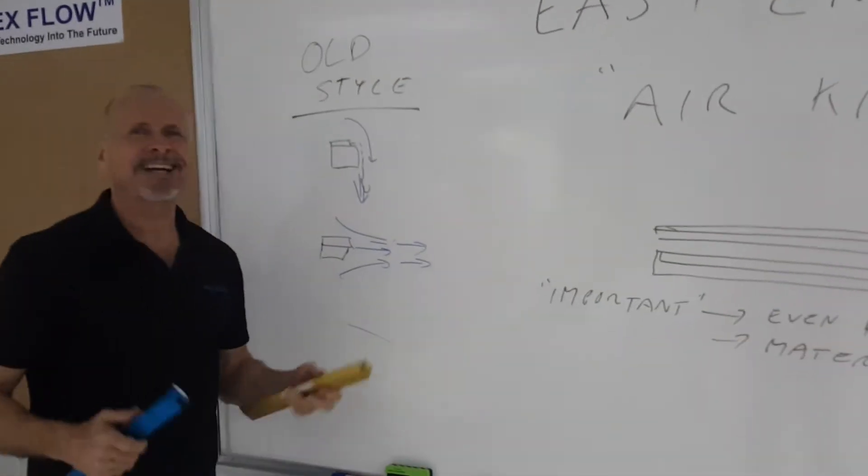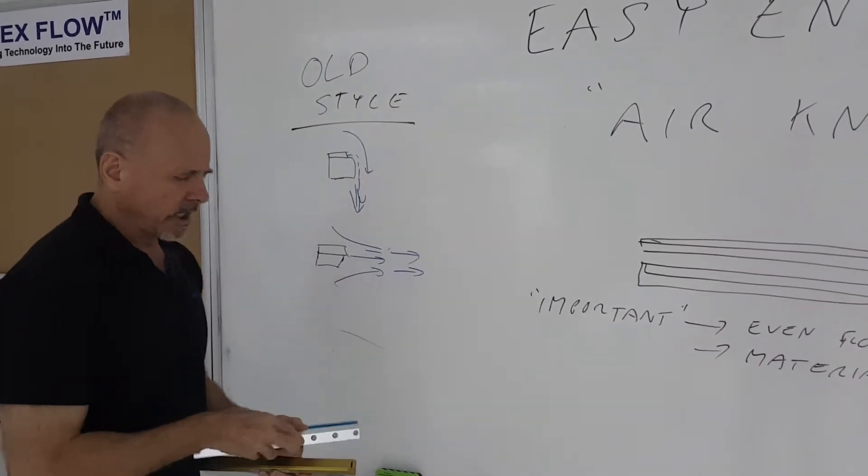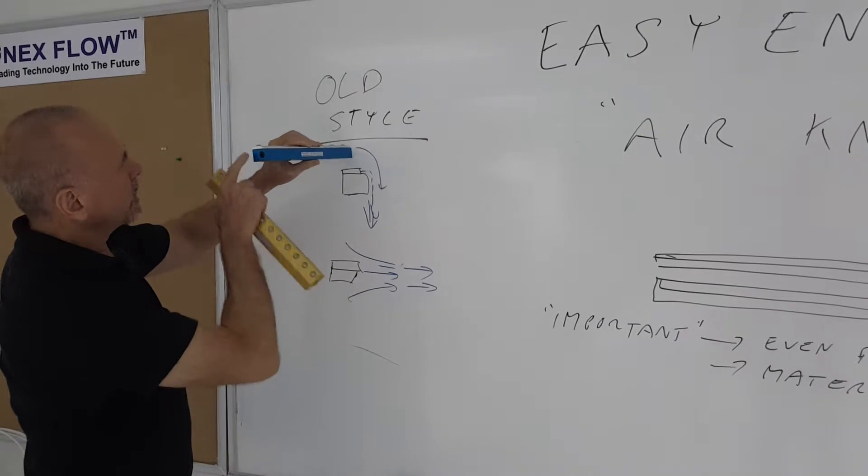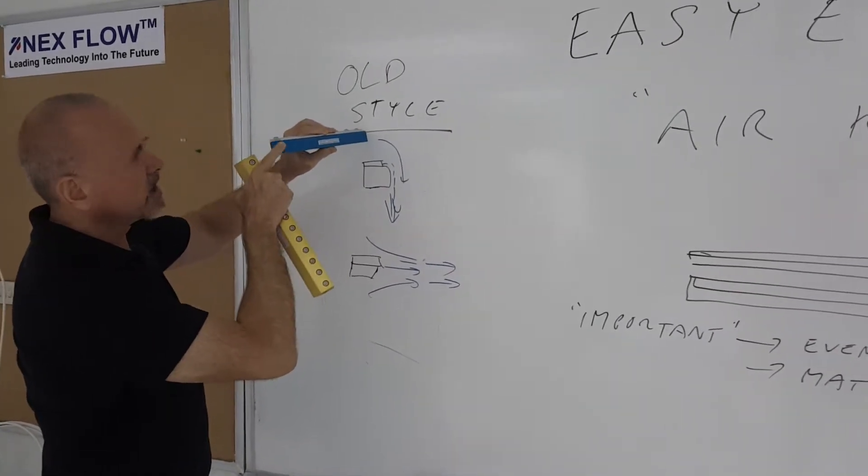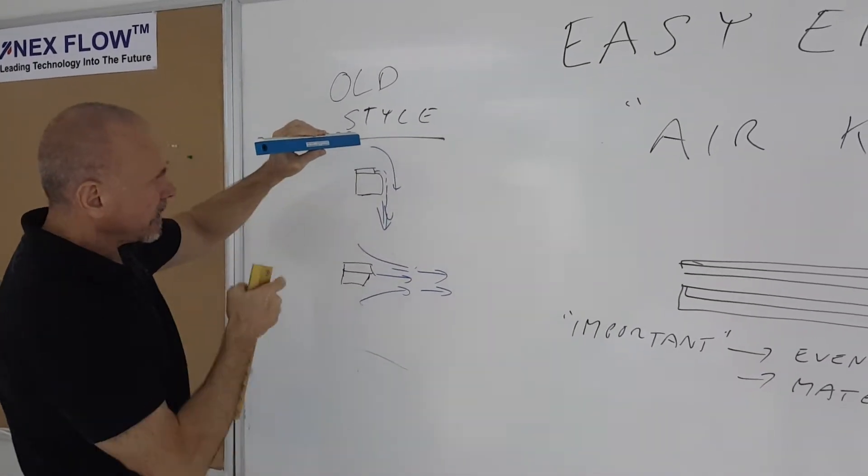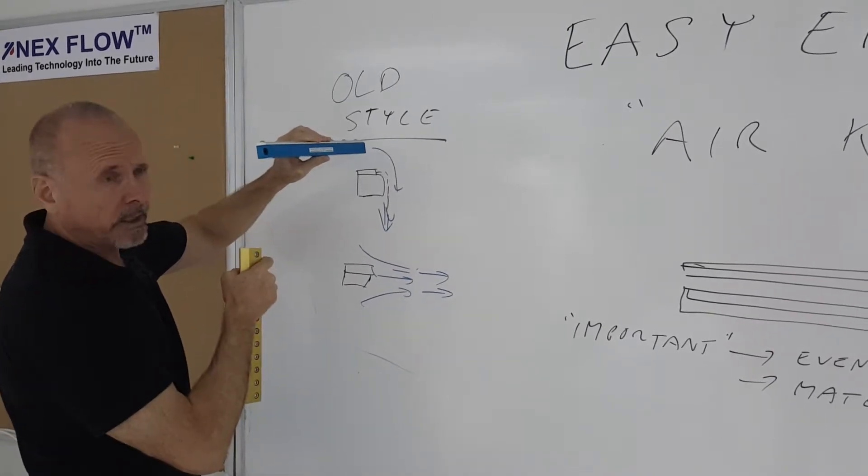There's two types of styles of air knives, two different styles. The older style, which has been around for a very long time, is this one here, where the compressed air comes out of the air knife, bends 90 degrees over a series of angles called a coanda angle, and amplifies airflow by entraining the air from the atmosphere with the compressed air coming out of the air knife.